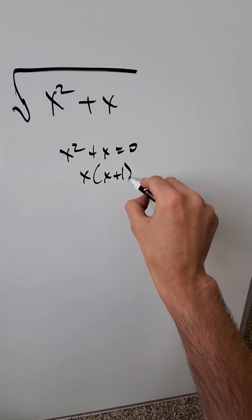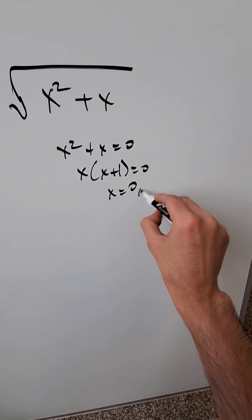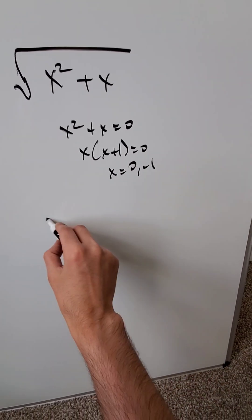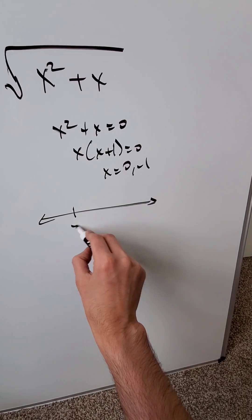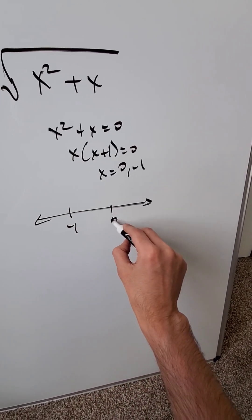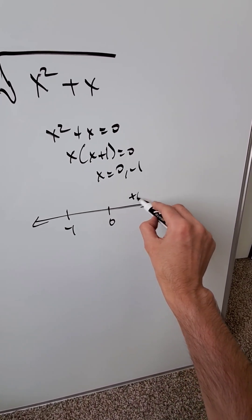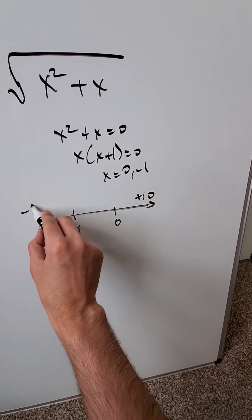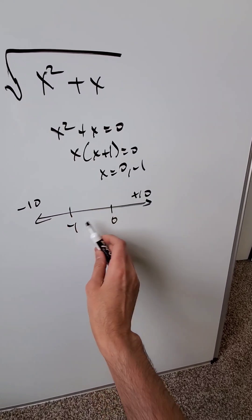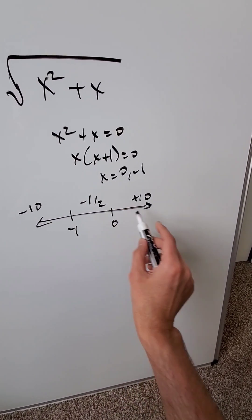You have x times (x plus 1) equals 0, so x is equal to 0 and minus 1. Do a number line and draw these out: minus 1 and 0. Pick a value after 0 like positive 10, a value before minus 1 like minus 10, and a value in between like minus 1 over 2.